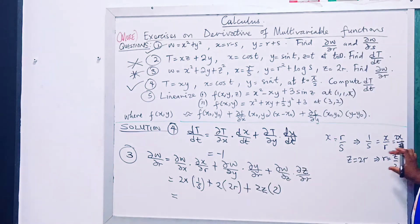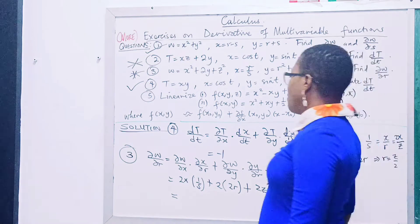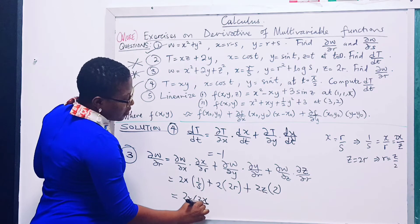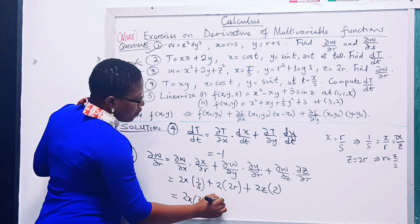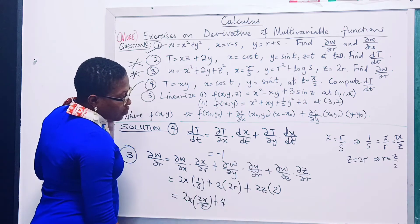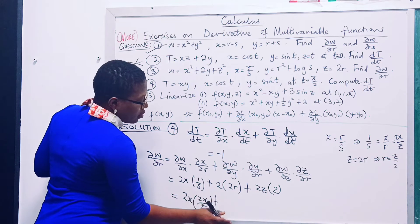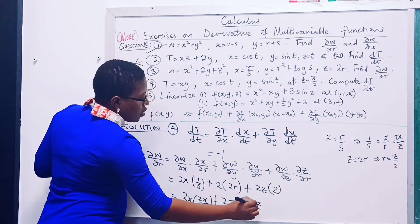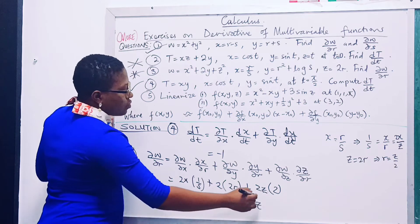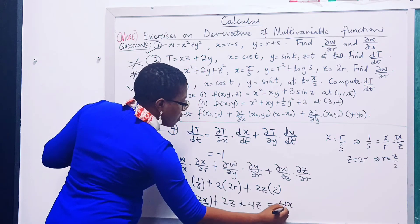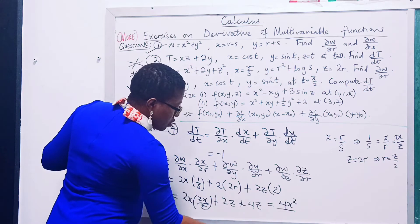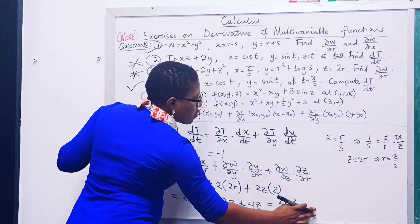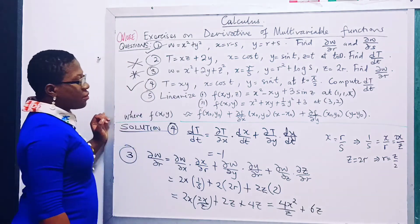Substituting r = z/2: 1/s becomes x/(z/2) = 2x/z. So the first term is 2x·(2x/z) = 4x²/z. The second term: 2y·2r = 4y·(z/2) = 2yz... and the third term 2z·2 = 4z. Collecting: 4x²/z plus 6z. That is the answer.